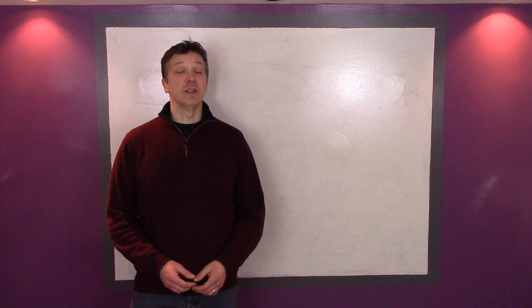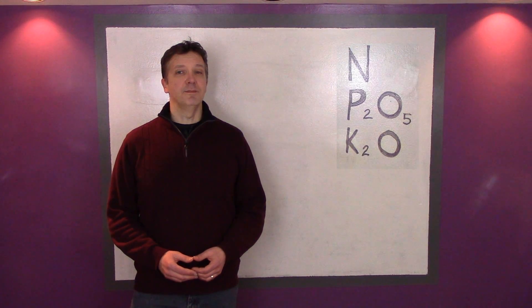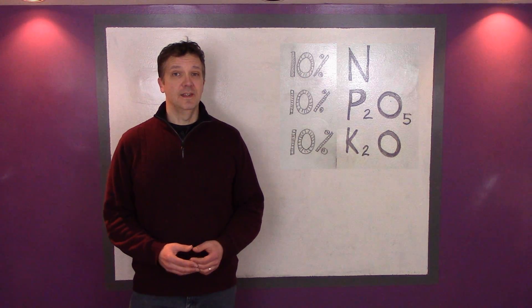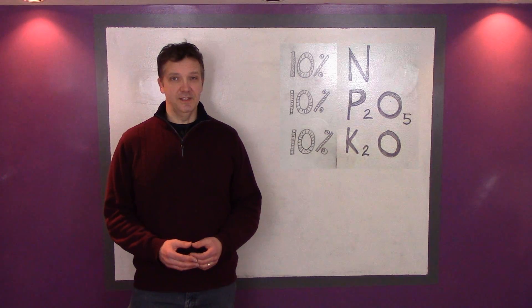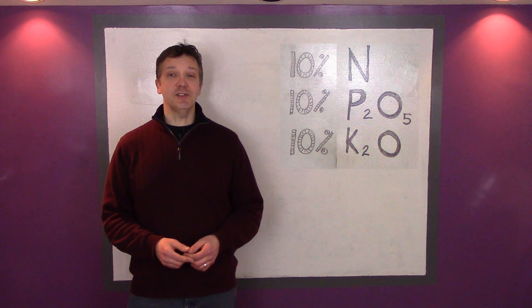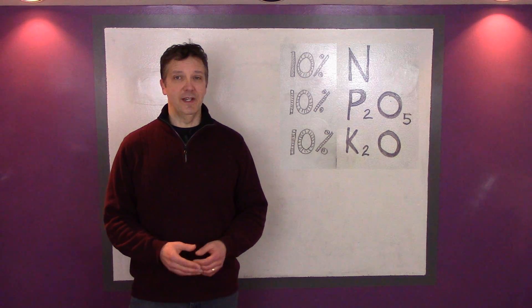A balanced fertilizer is one that contains roughly equal amounts of nitrogen, available phosphate, and soluble potash. For example, a 10-10-10 fertilizer is balanced because it contains 10% of each. Balanced fertilizers are often recommended as a way to provide sufficient levels of nitrogen, phosphorus, and potassium and a balance between the three elements.